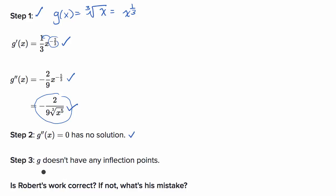In step three, he says g doesn't have any inflection points. This is a little bit suspect. In many cases, an inflection point is where our second derivative equals zero — and even then, it's only a candidate. We'd have to confirm that the second derivative switches signs. But here, we also have to remind ourselves that other candidate inflection points are where our second derivative is undefined.